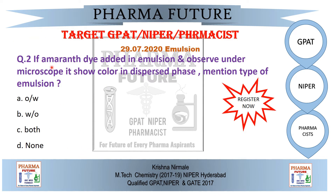Question 2: If Amaranth dye is added to an emulsion and observed under the microscope, it shows color in the dispersed phase. Identify the type of emulsion. Option A: O/W. Option B: W/O. Option C: both. Option D: none.